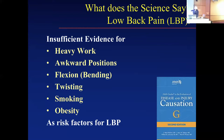There is a great book by Mark Melhorn and colleagues — $78 on Amazon — where they went through thousands of papers. They found insufficient evidence for heavy work, lifting in an awkward position, twisting, smoking, or obesity as risk factors for low back pain.